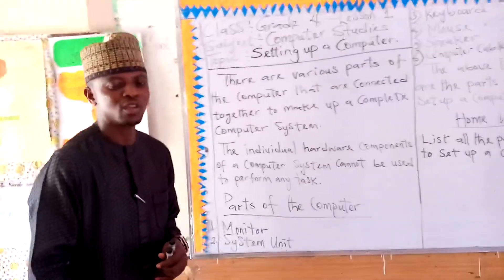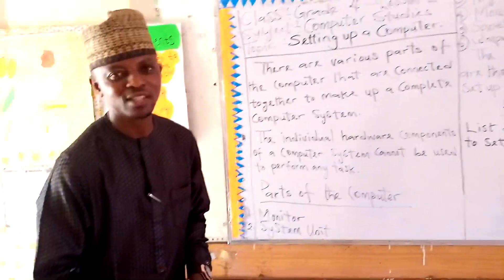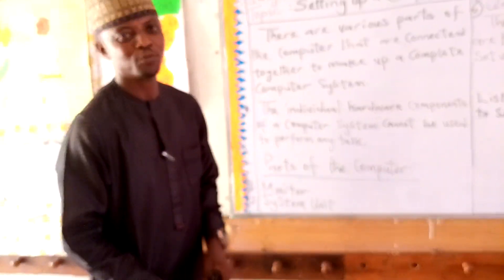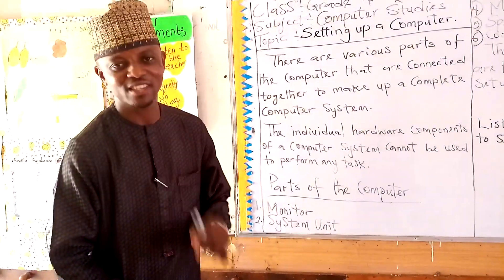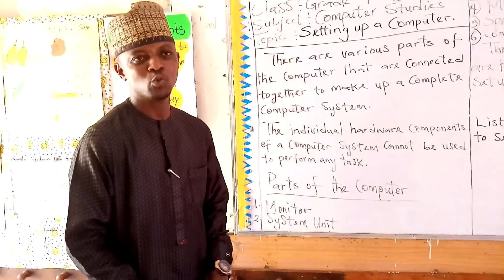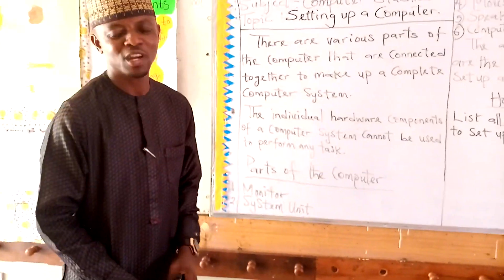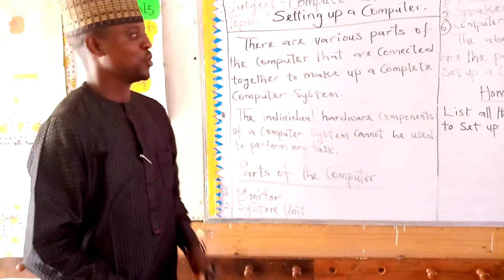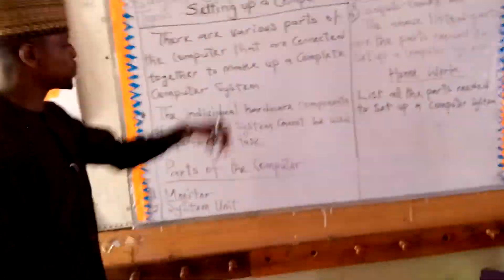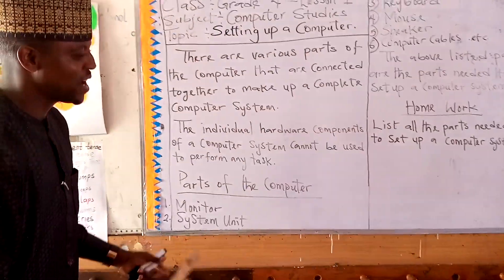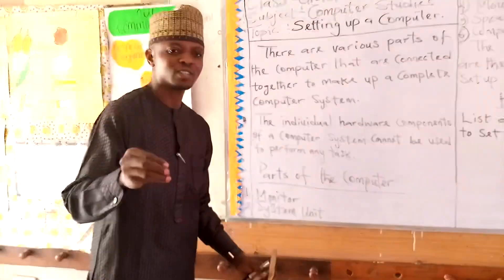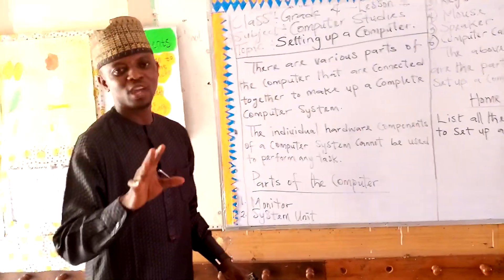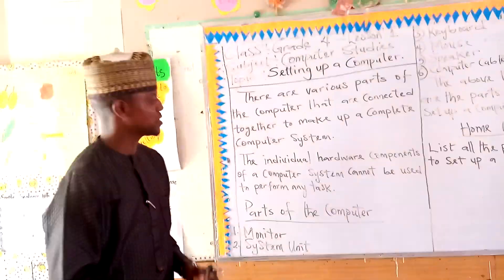The same thing is applicable to a computer system. If the computer system does not have a complete part, it will not be able to function as a system. That is why 'system' is added to it — because it is what makes it one. These various parts are put together to make a complete computer system.